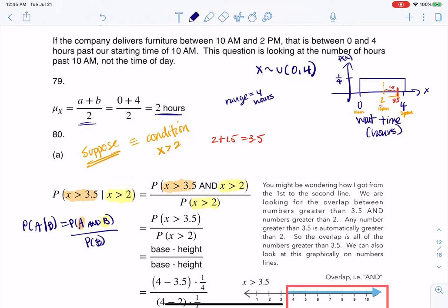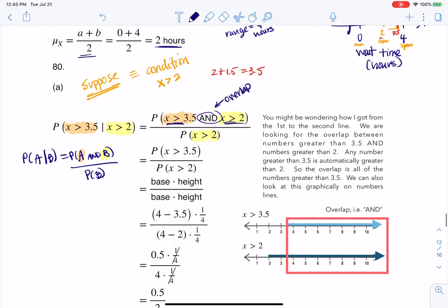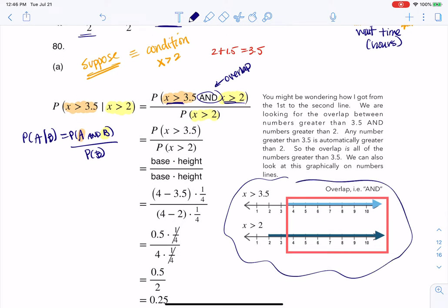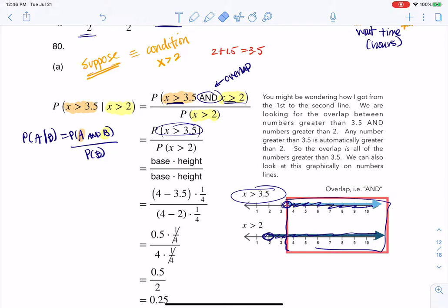Now when we talk about ands, we're looking for overlap. So where does x being greater than 3 1⁄2 and x being greater than 2 overlap? So let's remind ourselves over here about the overlap. So here I start with x greater than 2. I'd be an open dot, shade to the right. Here I start with 3.5, open dot, shade to the right. And where do they overlap? They overlap when you are greater than 3.5. So that's what my numerator simplifies to.